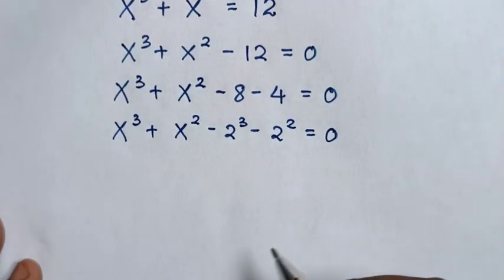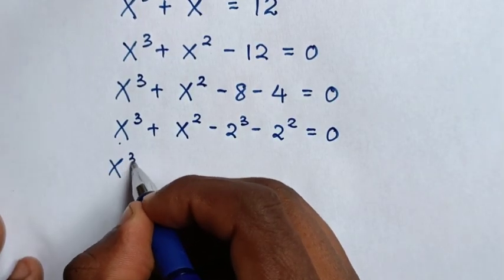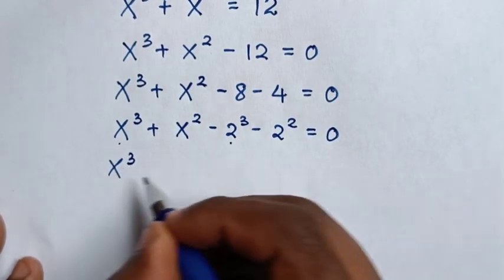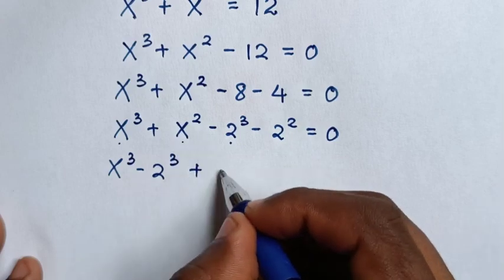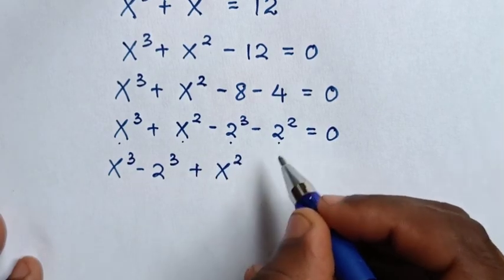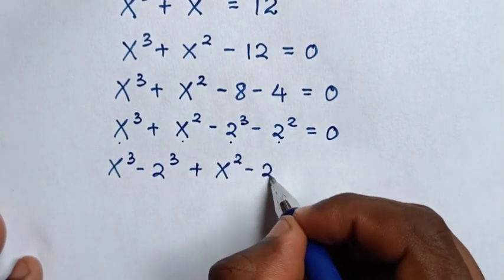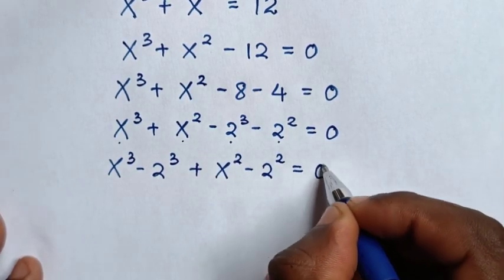In the next step, it will be x³ - 2³ + x² - 2² = 0.